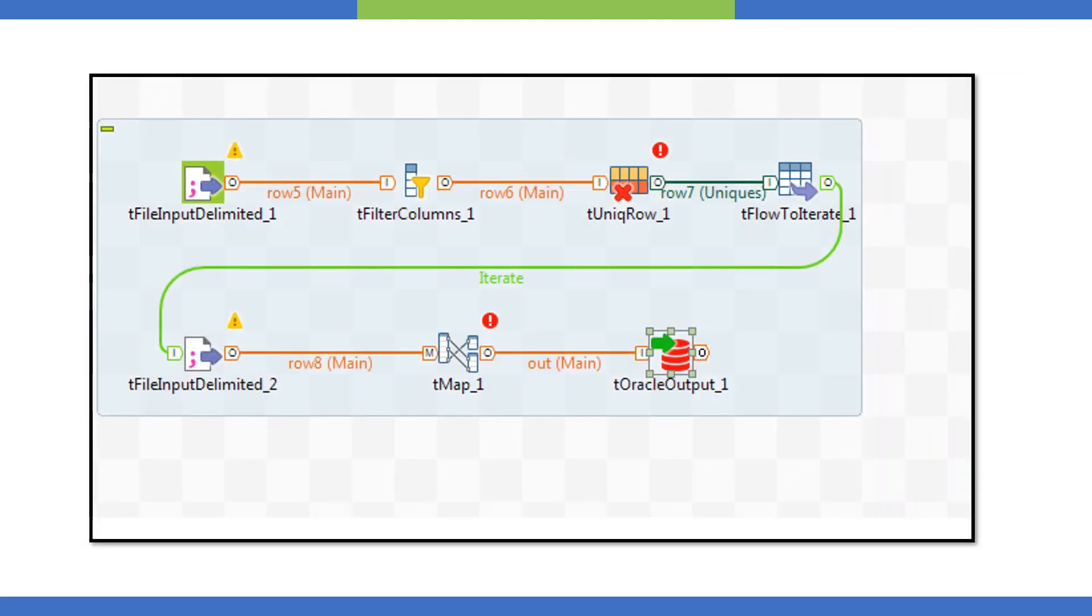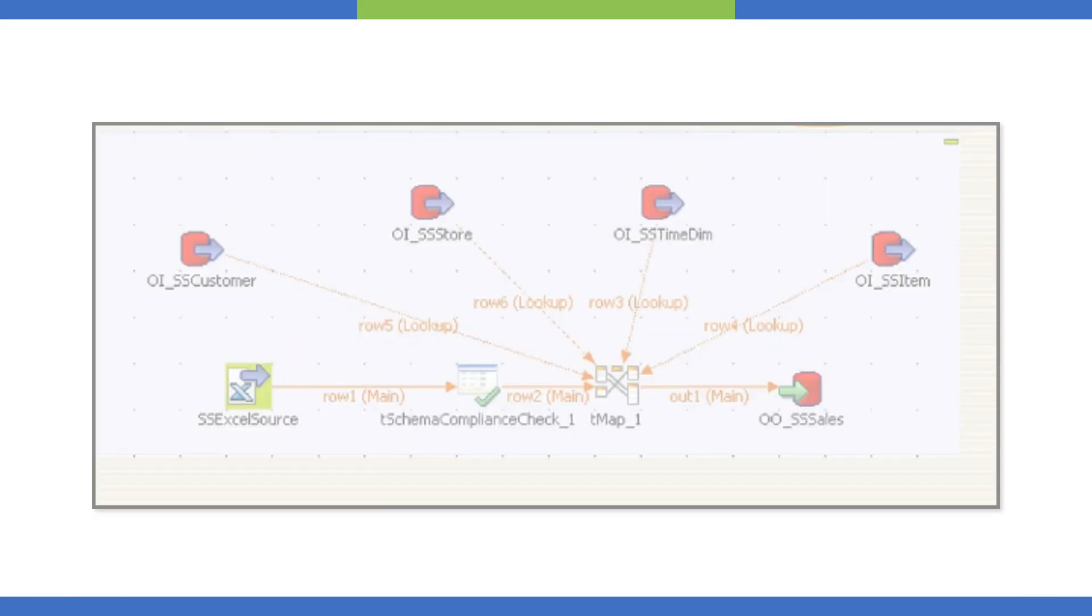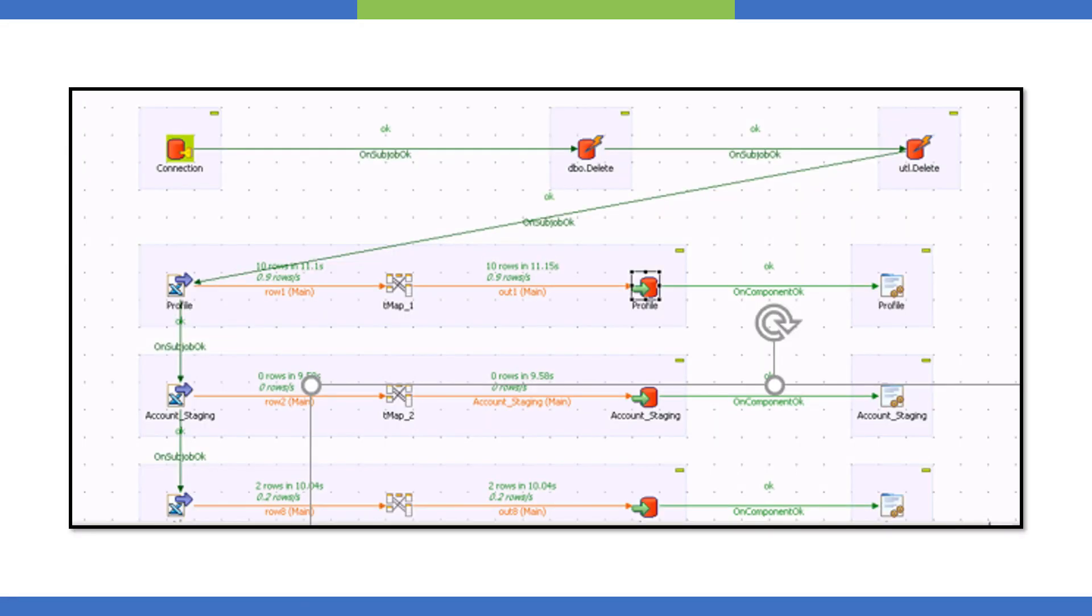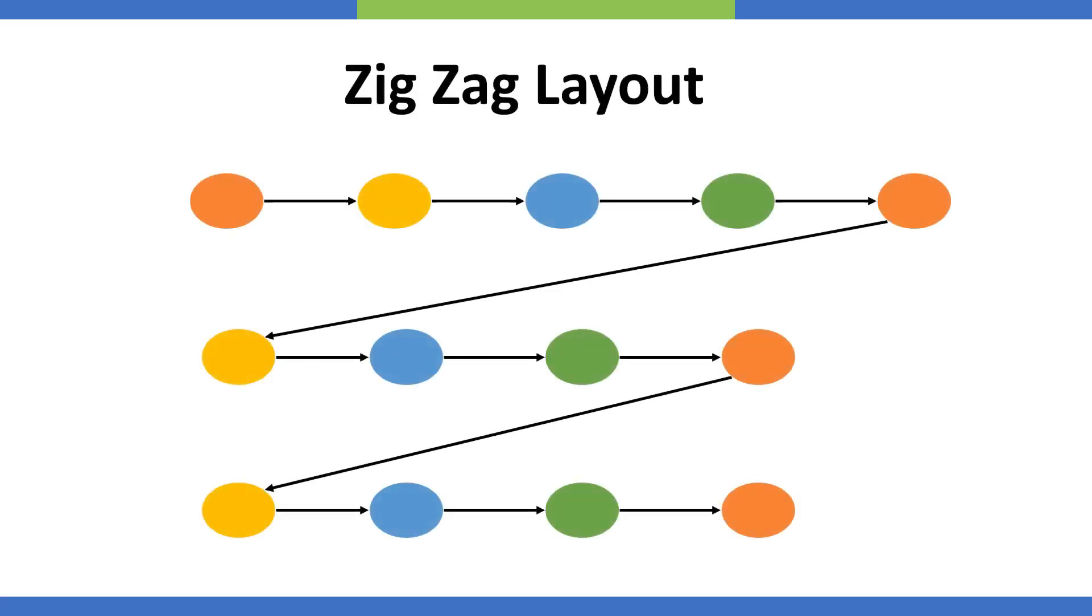There are different people following random approaches. You can see one snapshot in the picture. Some people start moving from one point and when they finish, they move to the next row. Some people follow other strategies. The most important thing is that your design should be readable and maintainable.